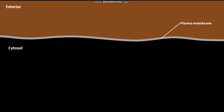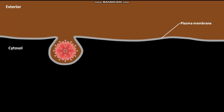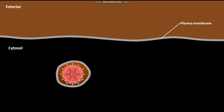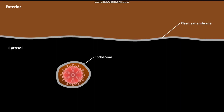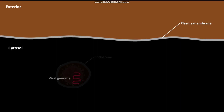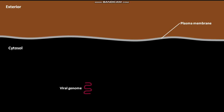During viral infection of a normal cell, the virus first attaches to the plasma membrane. The process of endocytosis then starts. The plasma membrane with the attached virus invaginates inward, forming a cup-like structure. This cup-like structure with the virus then pinches off from the plasma membrane and forms an endosome. The endosomal virus then releases its genome into the host cell cytosol.